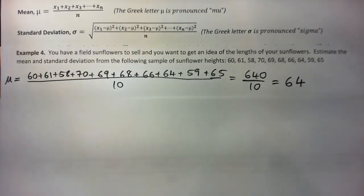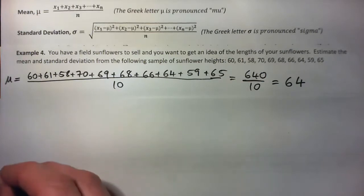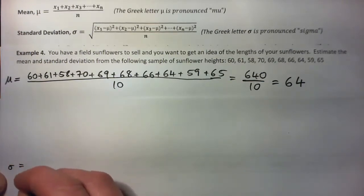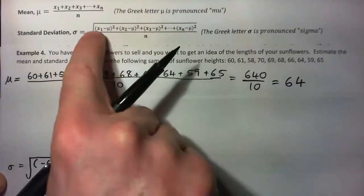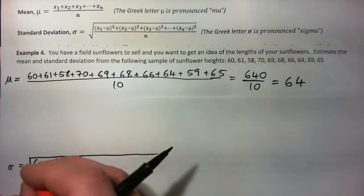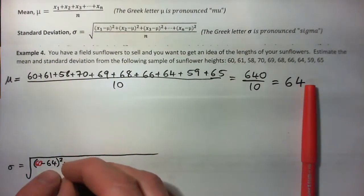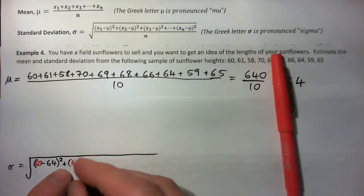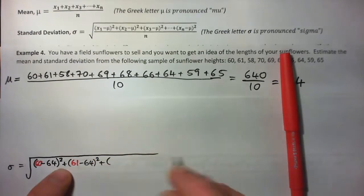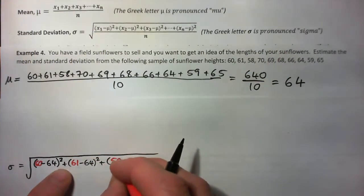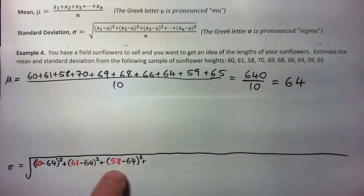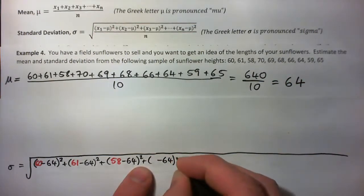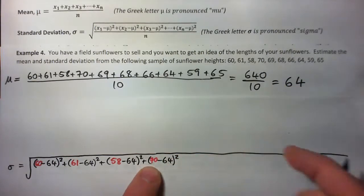Now we need to calculate the standard deviation. We need a big square root. We take each number, subtract the mean, and then square it. So the first number is 60: 60 subtract the mean, then square it. Then 61 subtract the mean and square it. Then 58 subtract the mean and square it. Keep going like this — press pause and try this yourself.